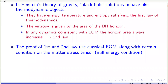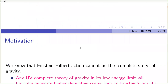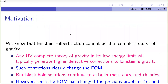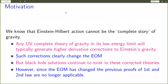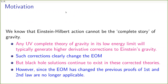The proof of the first and second laws uses classical EOM along with the null energy condition on the matter stress tensor. We know the Einstein-Hilbert action cannot be the complete story of gravity — it has pathologies like infinities at loop level and even in classical solutions like black holes. So let's assume there exists some UV-complete theory of gravity; in its low energy limit, it will typically generate higher derivative corrections to Einstein's gravity.